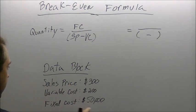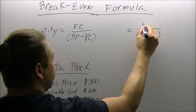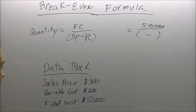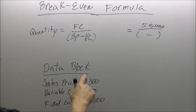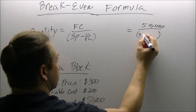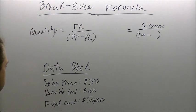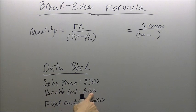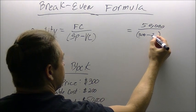Fixed cost is $50,000, put $50,000 right here. Our next step is sales price, sales price of $300. Our next step is variable cost, variable cost $200, plug it in right here.